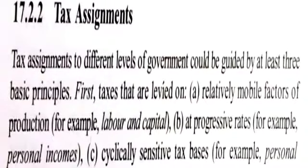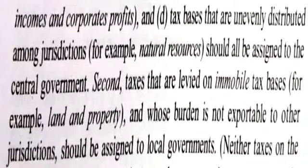Two, tax assignment. Tax assignment to different levels of government could be guided by at least three basic principles. First, taxes that are levied on a relatively mobile factor of production — for example, labor and capital — at progressive rates — for example, personal income — on cyclical-sensitive tax bases — for example, personal income and corporate profits — and taxes that are unevenly distributed among jurisdictions — for example, natural resources — should all be assigned to the central government.